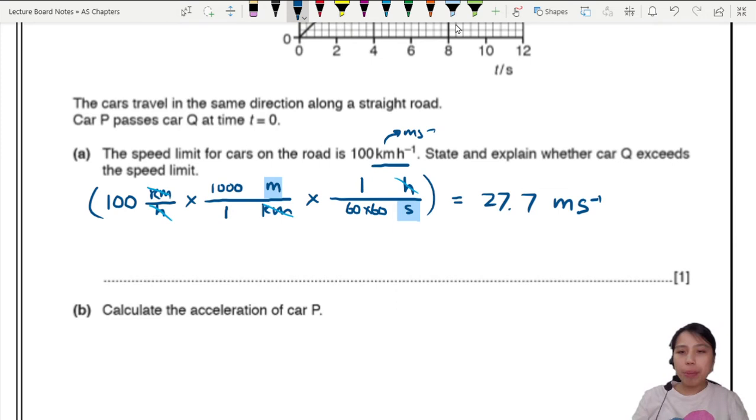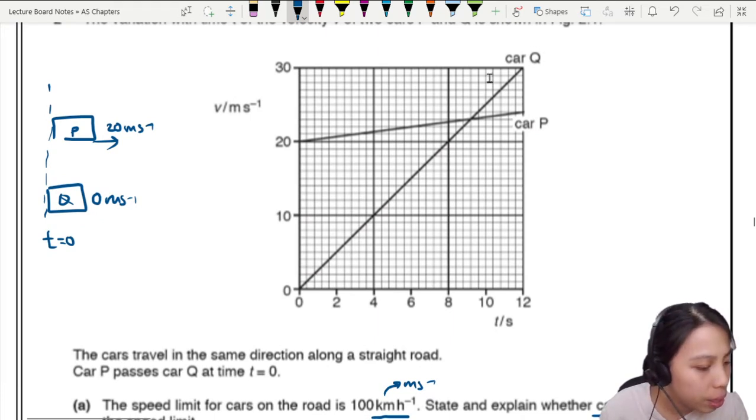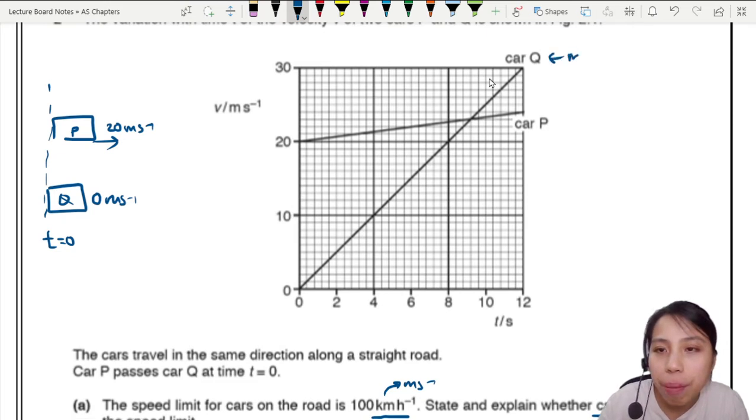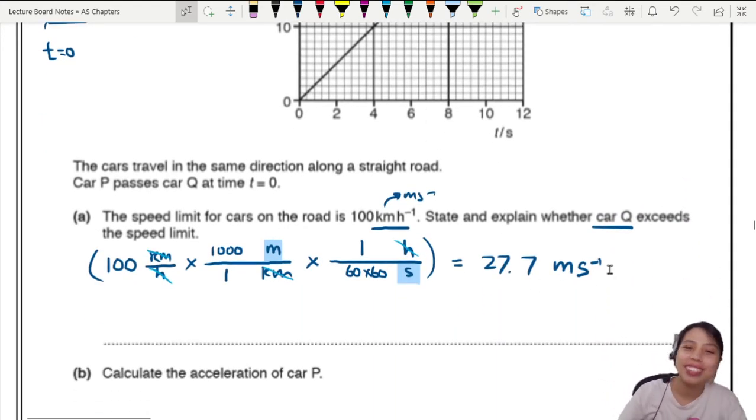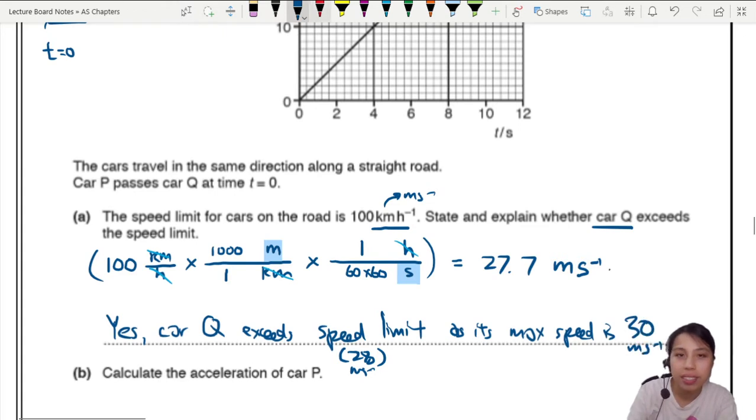You can use this for any unit conversion. So I'm going to say, all right, car Q, right? Let's do some inspection time. What's the fastest that car Q goes at? 30? Oh, oh. So car Q, the maximum speed is 30 meters per second. Whoops! The speed limit is 27.7. So it looks like you have... We say yes, car Q exceeds the speed limit. You can also say the speed limit is 27 or 28 roughly meters per second as its maximum speed is 30 meters per second. So if you talk about those main points, it's okay.